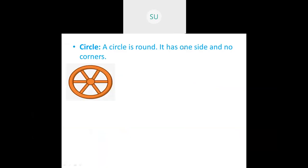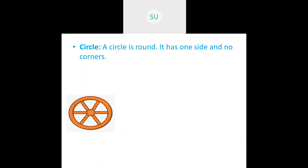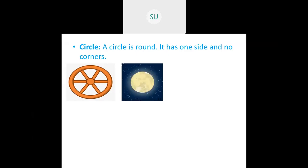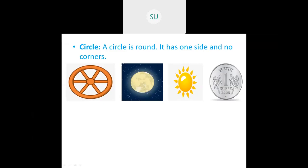First we saw what's a circle. A circle is round in shape and it has no sides and no corners. We also saw various examples for circles: a wheel, the moon, the sun, and a coin — all are circular in shape.